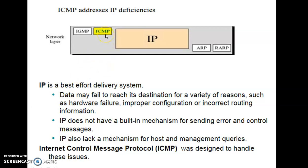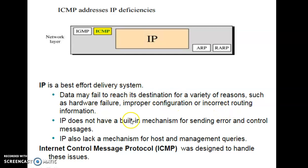ICMP protocol lies under the network layer. The reason to develop ICMP was to handle the issues generated in the network layer due to the IP protocol. Because IP is a best-effort delivery system — it says it will send the data in the best way, but it does not guarantee 100% delivery. Data may fail to reach its destination for reasons such as hardware failure, improper configuration, or incorrect routing. In such cases, ICMP plays a major role.